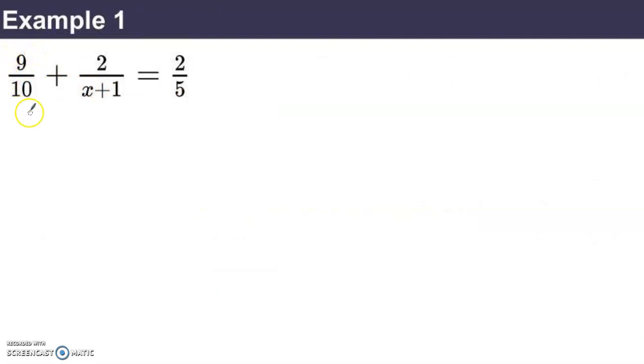Here's the first example I wanted to share with you in this video. We want to see if we can solve the equation 9 tenths plus 2 over x plus 1 equals 2 fifths. So, what I want to seek is what the least common denominator might be. Some polynomial that each of these goes evenly into. It is helpful that 10 is 2 times 5, so 5 goes evenly into 10 already. I'm thinking I need the 10 and the x plus 1. So, my least common denominator, I'll go with 10 times x plus 1.